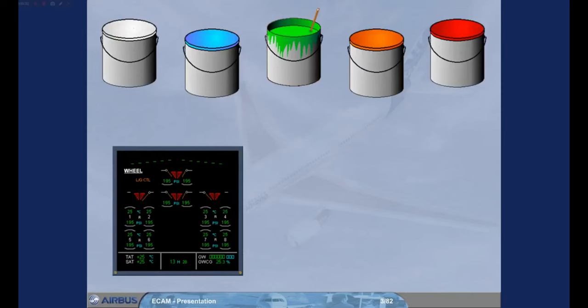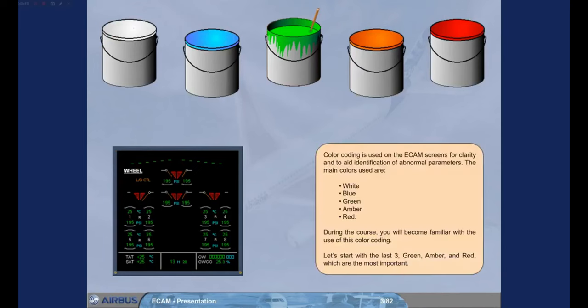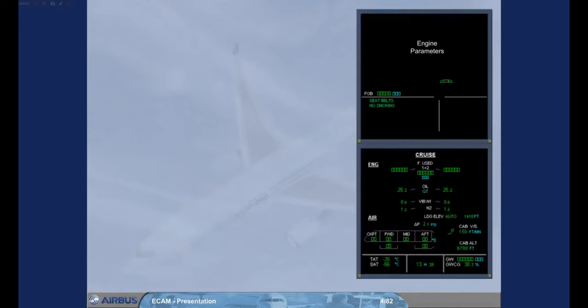Let's start with the last three — green, amber, and red — which are the most important. Green color coding is used to indicate a normal condition. Notice that on the Engine Warning Display and the System Display shown, all indications are normal.